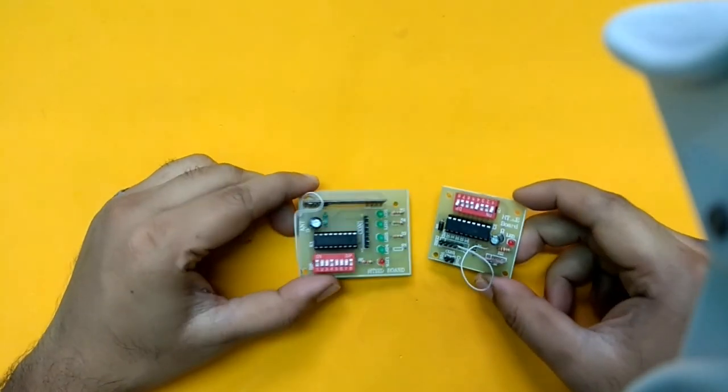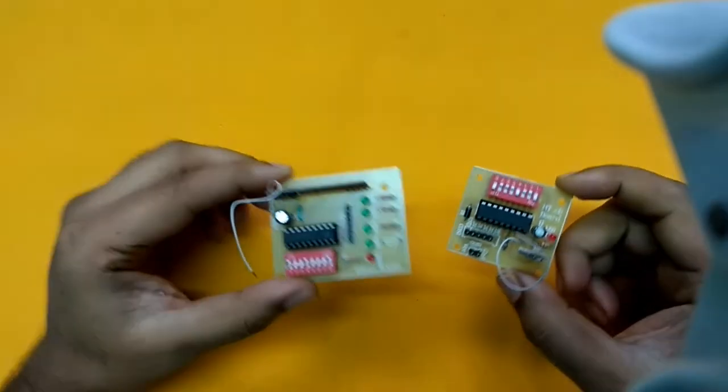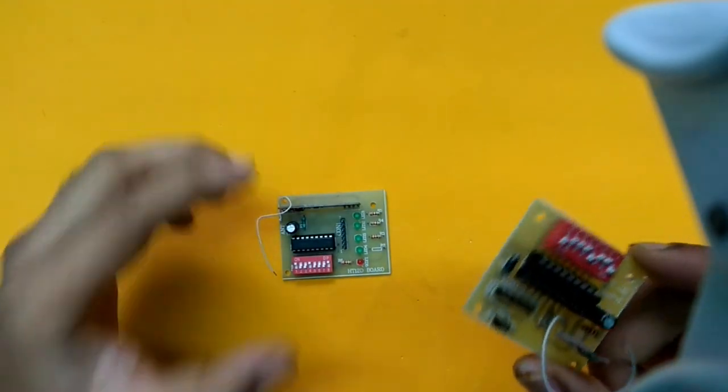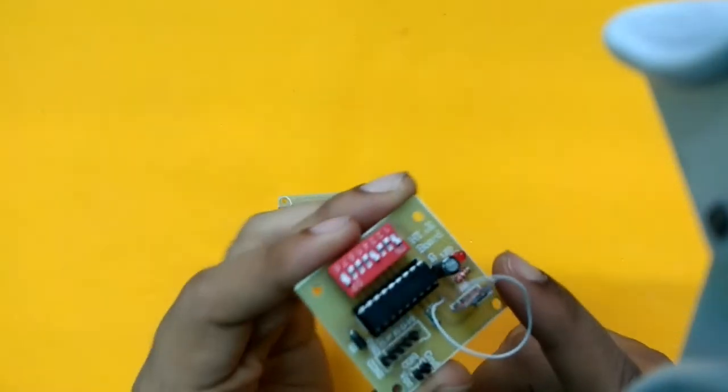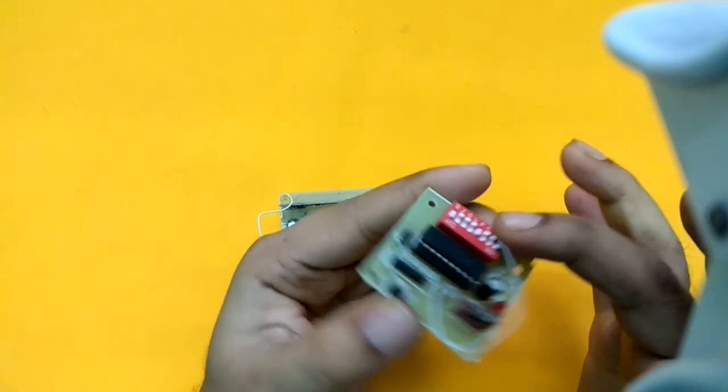I've got ready-made RF transmitter and receiver boards which I bought online. This board has HD12E at its core for encoding purposes, 8 DIP switch buttons for setting the address of encoder. At the corner you'll see the TX module in this board and headers for obtaining the output.